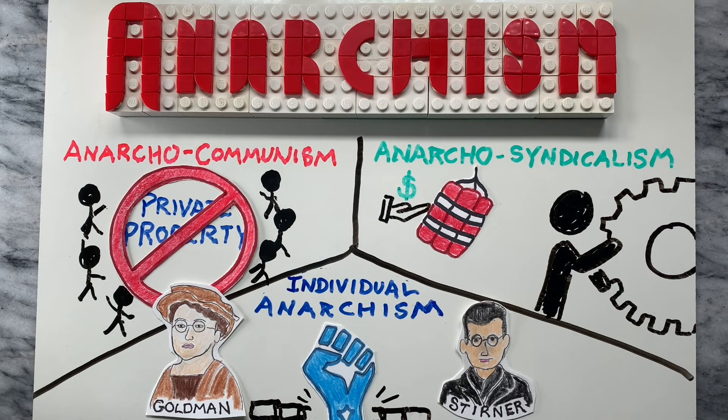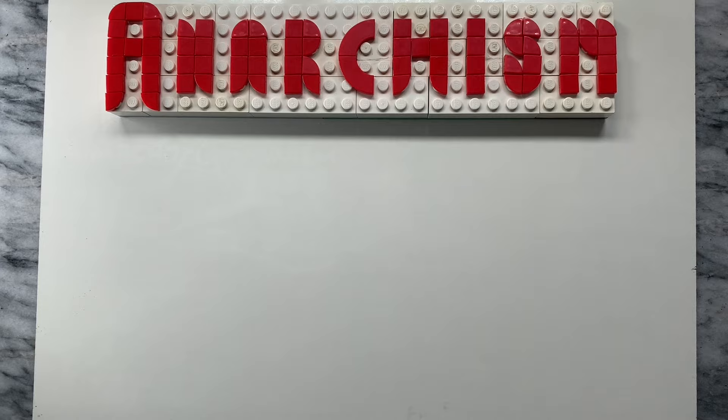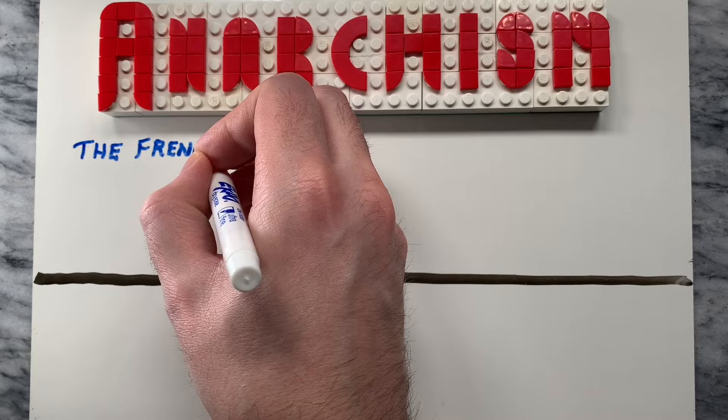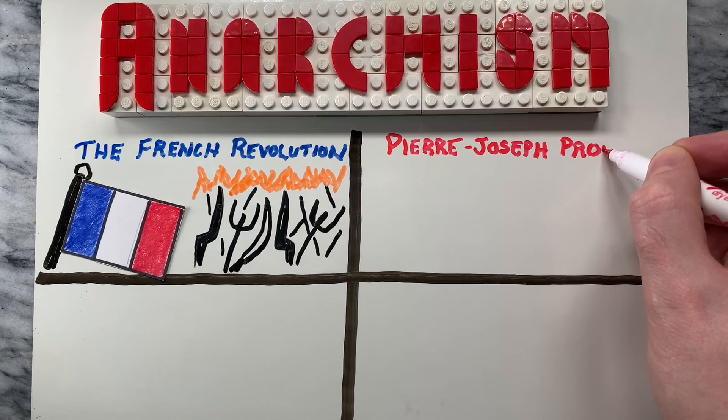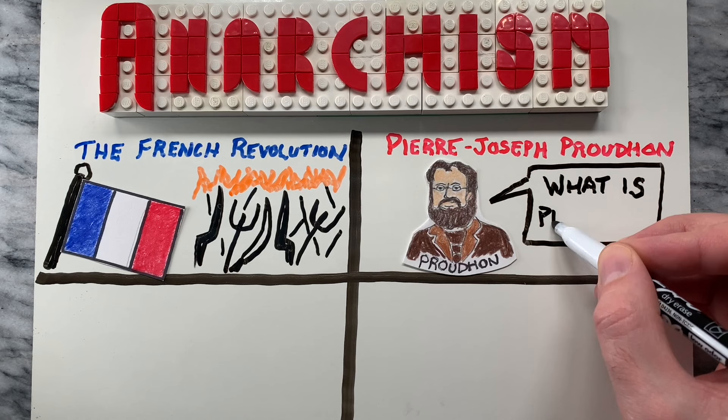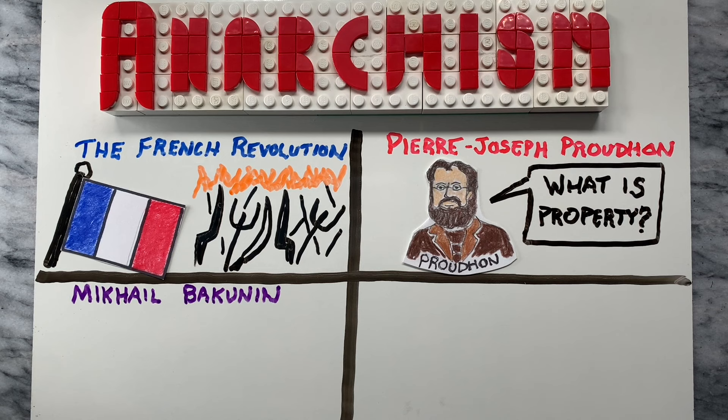Anarchism has a long and varied history with roots in both classical liberalism and socialism. Key figures and movements include the French Revolution, which inspired many early anarchists with ideas of liberty, equality, and fraternity. Pierre-Joseph Proudhon, who is often considered the first self-proclaimed anarchist, wrote the influential work 'What is Property?' in 1840. Mikhail Bakunin, a Russian revolutionary and writer, was a key figure in the anarchist movement of the late 19th century.